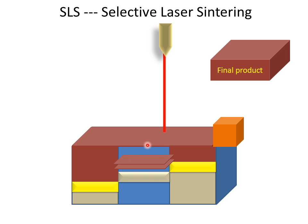The final product will look like this — which was our CAD model. By this process we can make a final product or prototype, layer by layer, with the help of powder and a CO2 laser. This is the selective laser sintering machining process. Thank you.